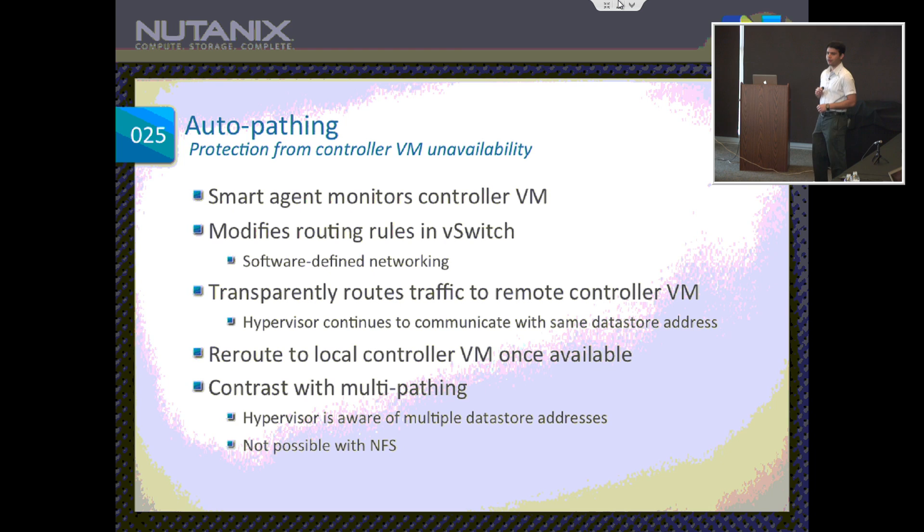The next feature I want to announce, which we've been selling for a while, is called auto-pathing. Referring back to my architecture slide showing the controller VM, there is one controller VM in a given node. You might ask: what happens if the controller VM itself dies? Well, auto-pathing is how we keep the whole system available even when the controller VM has died.